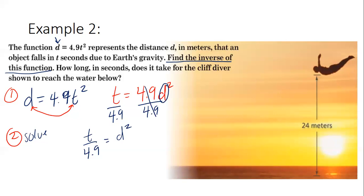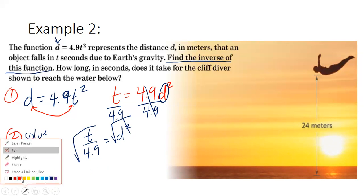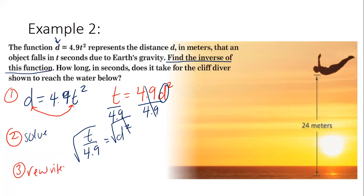Is d by itself yet? No. What's the last thing needed? Take the square root — the opposite of squaring is taking the square root. We take the square root of the numerator and denominator, which cancels the square, so we now know d = √(t ÷ 4.9).